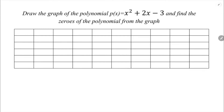Draw the graph of the polynomial x² + 2x - 3 and find the zeros of the polynomial from the graph. This is a quadratic polynomial, so we will get a parabola.